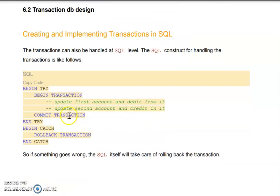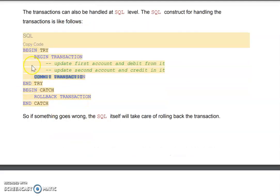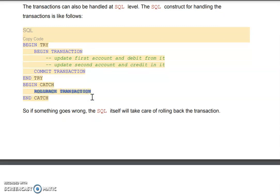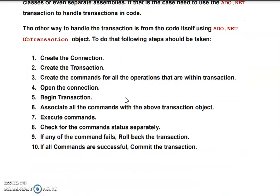In terms of programming, this should be written inside exception handling — a try-catch statement. In the try block: begin the transaction, update account one, update account two, then commit the transaction once the update operations are done. In the catch block: if any error occurs, roll back the transaction and go back to the previous state.